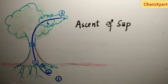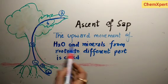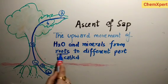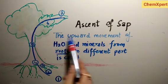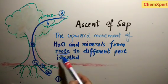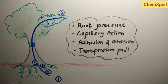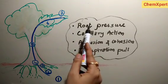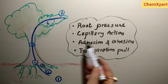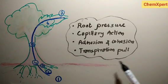The next topic is ascent of sap — the upward movement of water and minerals from roots to different parts of the plant. Ascent of sap takes place by four methods: root pressure, capillary action, adhesion and cohesion forces between water molecules, and transpiration pull.